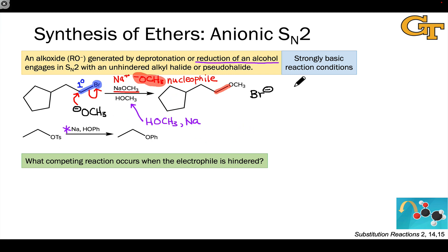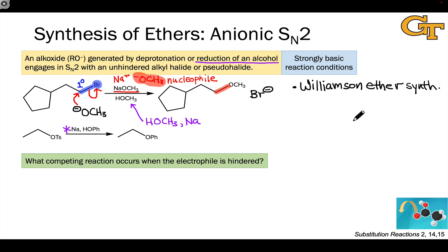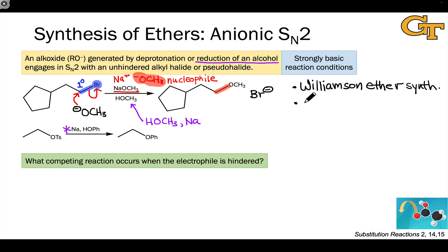This method — the synthesis of ethers through an anionic SN2 reaction — is referred to as the Williamson ether synthesis. For reasons we'll explore in a second, the Williamson ether synthesis is limited to the synthesis of ethers involving at least one primary alkyl group, so that the SN2 process can work. However, a related reaction can be used to synthesize aryl ethers from nucleophilic anionic oxygen and alkoxides.